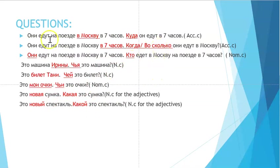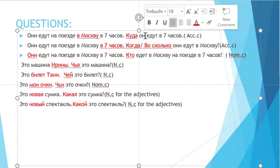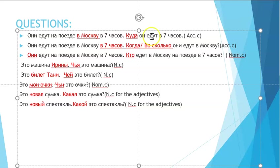Let's look at more examples. For the sentence 'они едут на поезде в Москву в семь часов' (they go by train to Moscow at seven o'clock), if we put a question to 'Москву' — accusative with verb of motion — the question is 'куда': 'куда они едут в семь часов?'